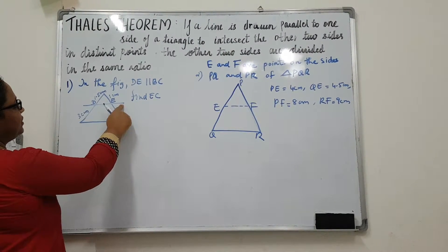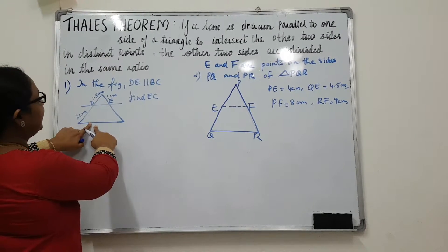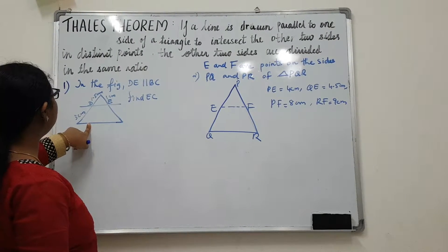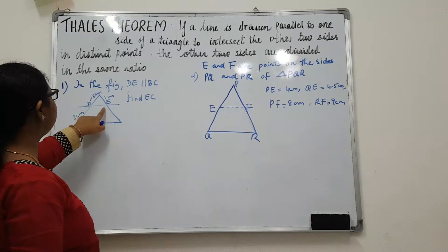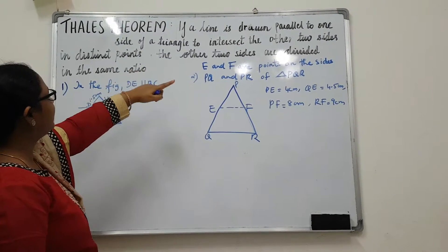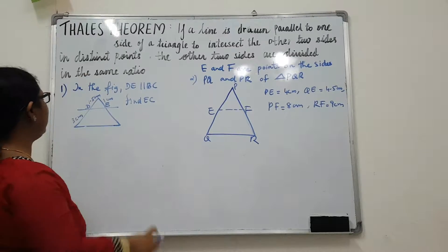So in this triangle, if BE is the line which is drawn parallel to this side, it will intersect the other two sides at distinct points, and also it is said that the two sides are divided in the same ratio.